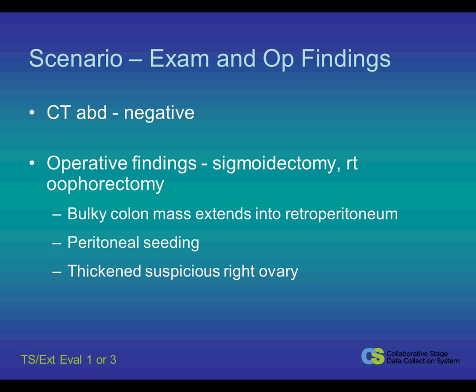In the scenario we have here, the patient was taken to surgery for diverticular disease. A CT of the abdomen preoperatively was negative. The findings at the time of the operation showed a fairly bulky mass noted in the sigmoid colon, very redundant back onto itself. There was also thickening and an abnormal appearing right ovary. There was some peritoneal seeding noted, and this mass seemed to extend extra-colonic and drew up the retroperitoneum into the mass.